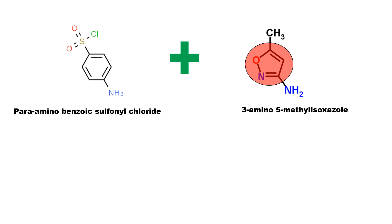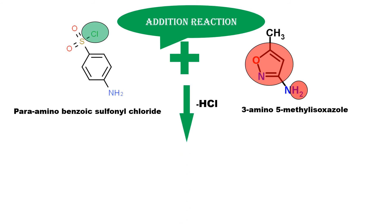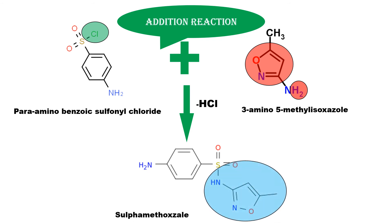We carry out an addition reaction. The chlorine group takes one hydrogen molecule from the amine group and is removed in the form of HCl. Both compounds are then joined together, and the isoxazole ring is attached to give the final product, Sulfamethoxazole.